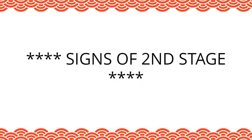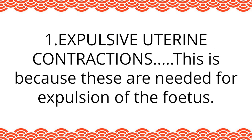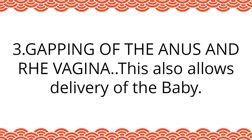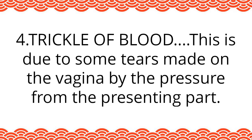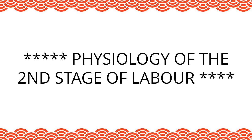Signs of second stage. One: expulsive uterine contractions, which are needed for expulsion of the fetus. Two: rupture of the forewaters, to give way for passage of the baby. Three: gapping of the anus and vagina, which also allows delivery of the baby. Four: trickle of blood, due to some tears made on the vagina by pressure from the presenting part.